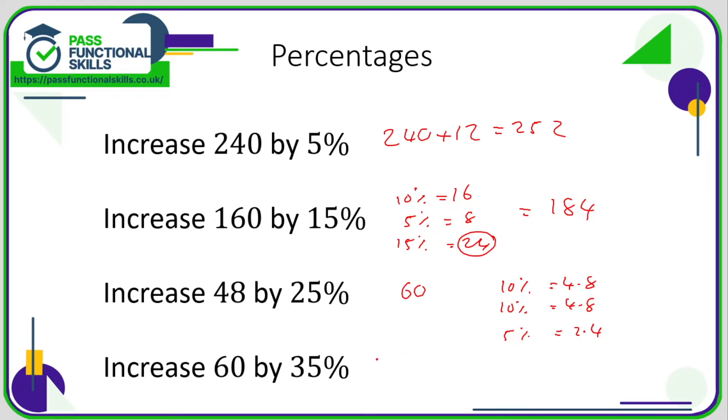Increase 60 by 35%. First of all, let's work out 35% of 60 and then add it on. Well, 10% is 6, so 30% is 18 and 5% is 3. So 35% is 18 plus 3, which is 21. So we need to add 21 to 60, and we get 81.